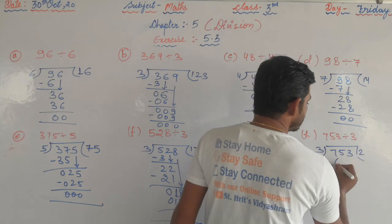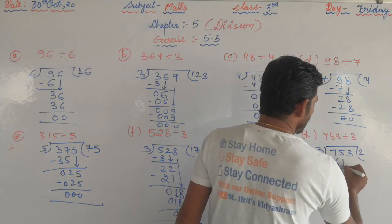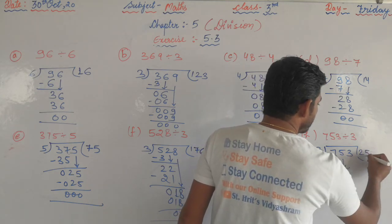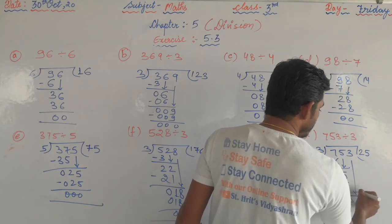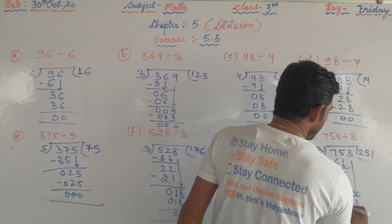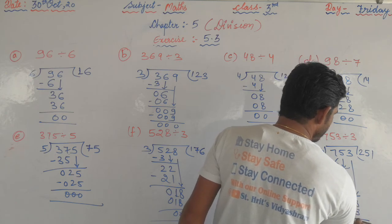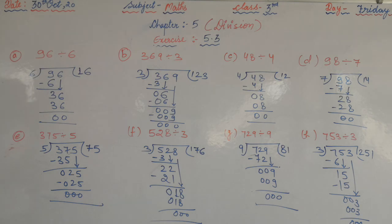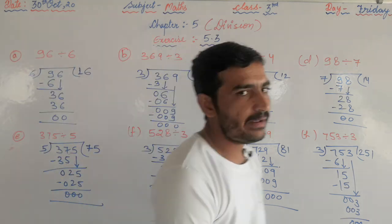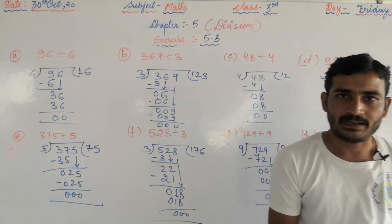Finally, 753 divided by 3. Three twos are 6 — first step gives quotient digit 2, then bring down 5: three fives are 15, bring down 3: three ones are 3, remainder 0. The quotient is 251. So Exercise 5.3 is also completed today. That's all for today — thank you and have a nice day. Take care, bye!